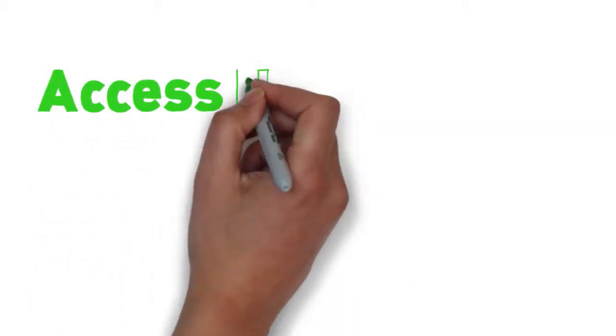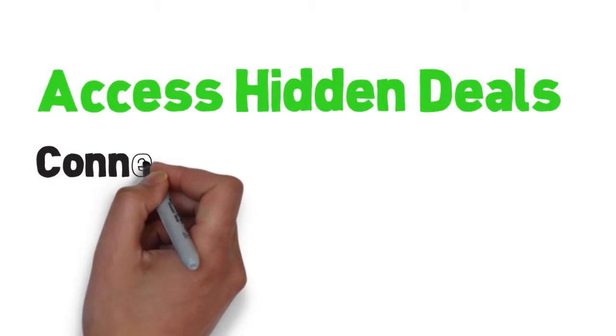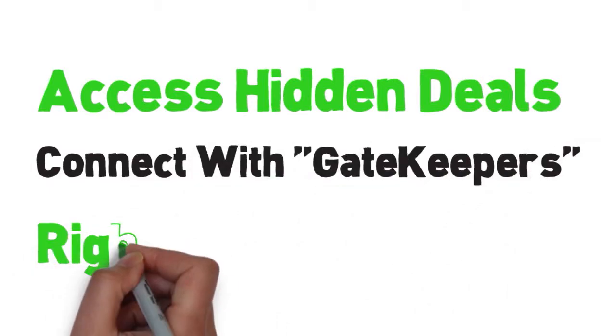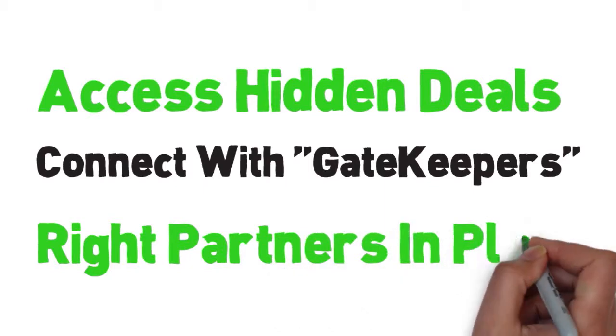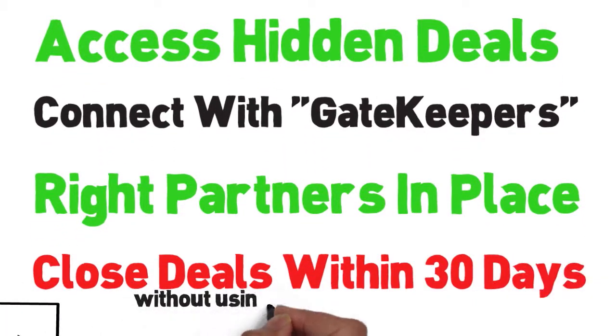Like Charlie, you will access these hidden off-market real estate deals that it seems only the privileged can get to. You will connect with gatekeepers that control these deals. And best of all, you will have the right partners in place that have money, so that you can close deals within 30 days, all without using your own money or credit.